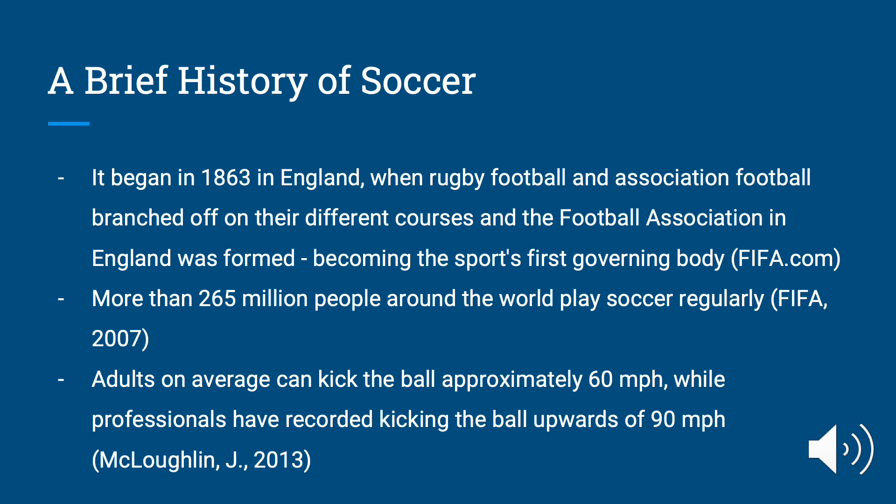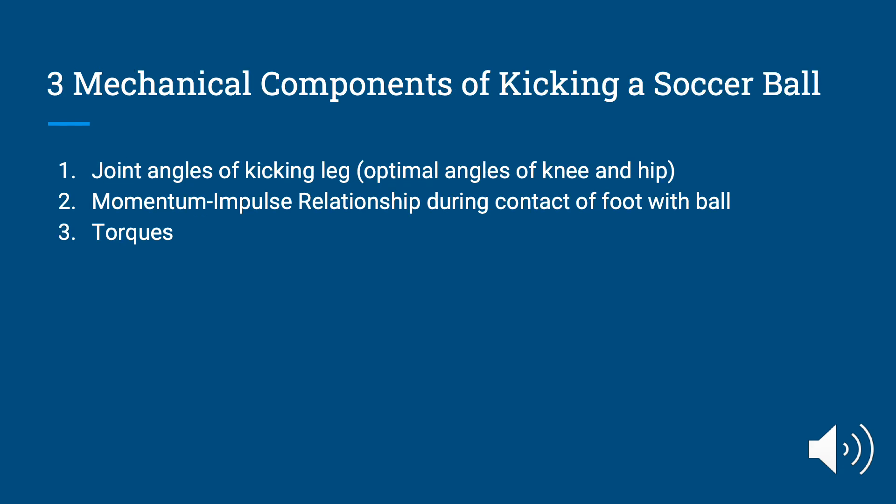More than 265 million people around the world play soccer regularly, and we're going to be focusing on kicking a soccer ball. Adults, on average, can kick the ball approximately 60 miles an hour, while professionals have recorded kicking the ball upwards of 90 miles an hour. The three mechanical components we're going to focus on today are the joint angles of the kicking leg — including the optimal angles of the knee and hip — the momentum-impulse relationship during the contact of the foot with the ball, and torques.